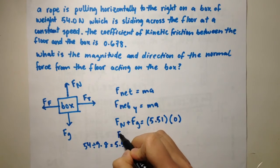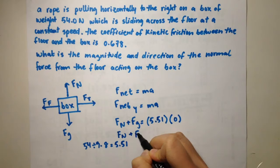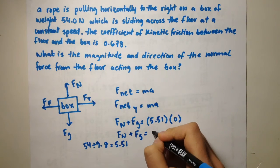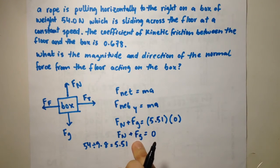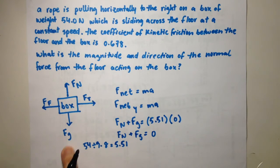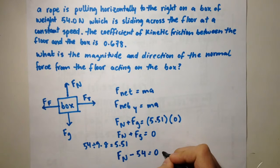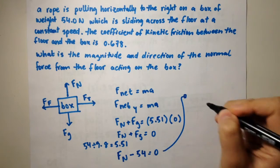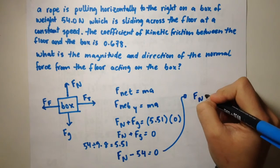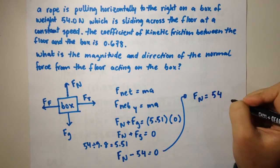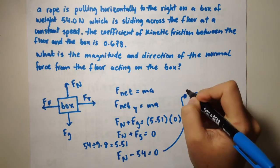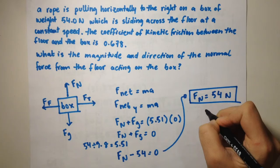So we know that the normal force plus the force due to gravity equals zero. The force due to gravity is the weight of the box, which is 54 newtons acting downwards. So the normal force minus 54 equals zero. We can add 54 to the other side and get the normal force equal to 54 newtons, and that is in the upwards direction.